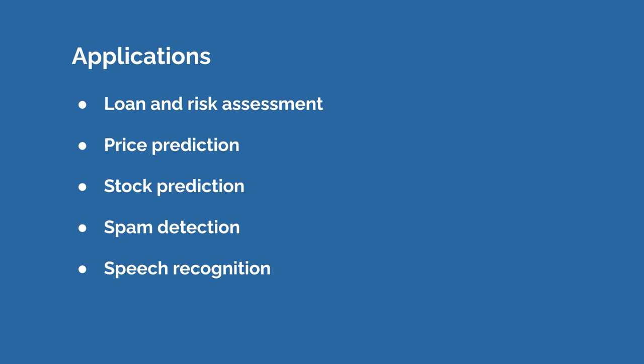We are not even halfway through all the applications — there are so many applications of supervised learning. That's why this course is very exciting because we're going to learn a very powerful tool. Another example is image classification: you can use supervised learning to tag and label images. That is actually the main priority we'll be focusing on in this course. You may have heard the term computer vision, which refers to teaching computers how to recognize images, videos, webcams, and more.